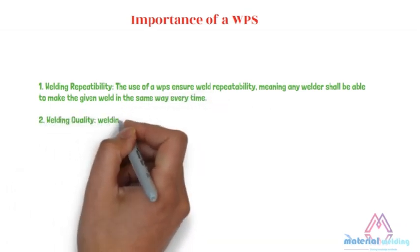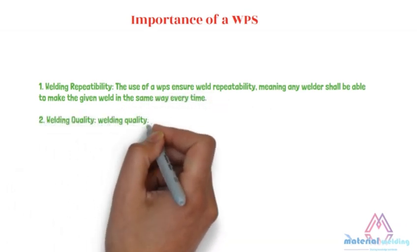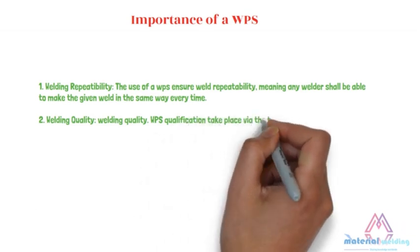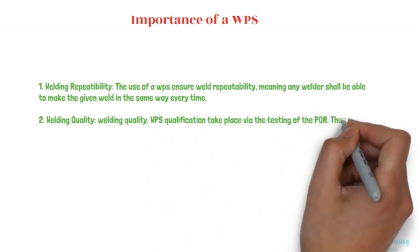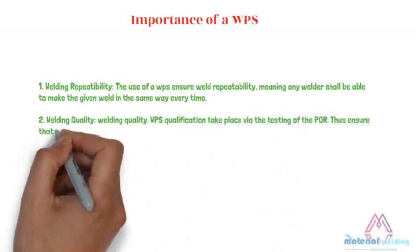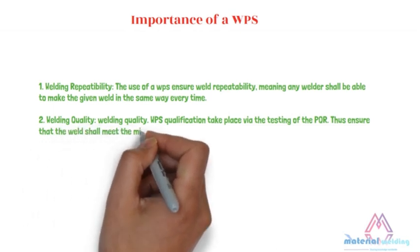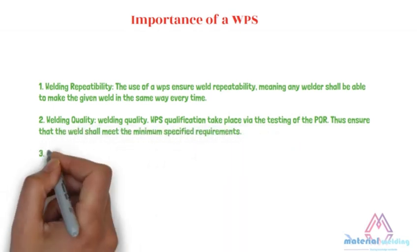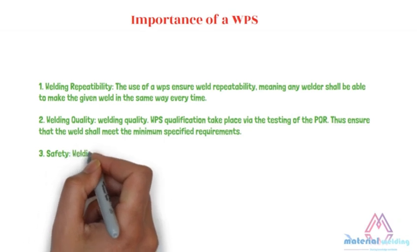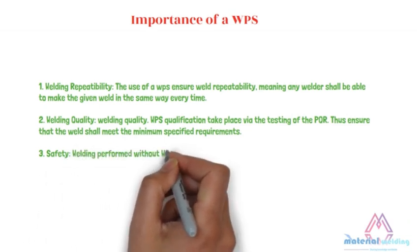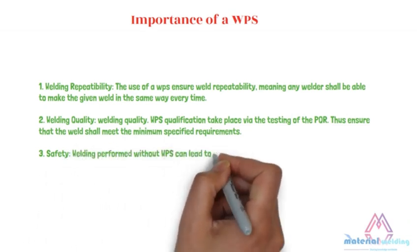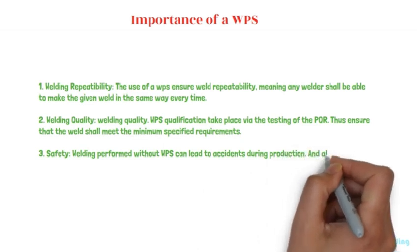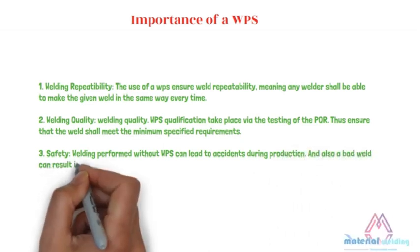Number two: welding quality. WPS qualification takes place via the testing of the PQR, thus ensuring that the weld shall meet the minimum specified requirements. Number three: safety. Welding performed without a WPS can lead to accidents during production, and a bad weld can result in serious fatality.